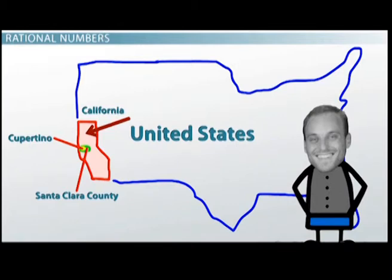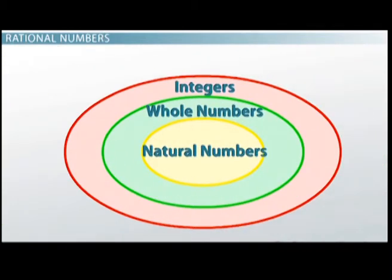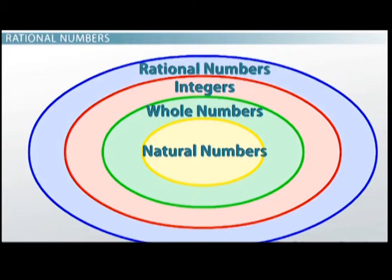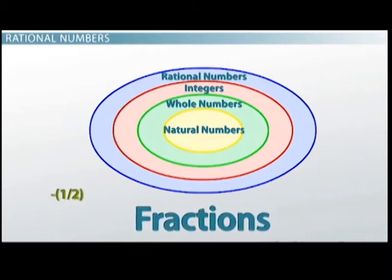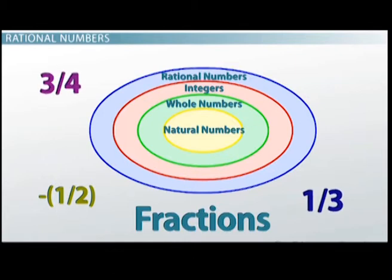That trend continues with the numbers, and as we take another step back, we come to what are called the rational numbers. The new addition to the club now are fractions, which means we could have things like negative one-half, or one-third, or three-fourths, or maybe eleven-sevenths. The list becomes a little bit harder to write, but again, you can imagine that there's a lot of different kinds of numbers in here.